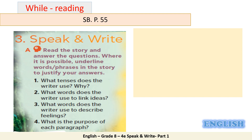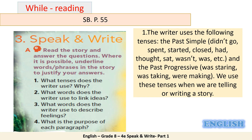Let's answer the first one: what tenses does the writer use and why? The writer uses past simple — examples: didn't go, spent, started, closed, had thought, sat, wasn't, was — and also past progressive — examples: was staring, was taking, were making. We use these tenses when we are telling or writing a story. Remember, we use past simple and past progressive to speak or tell a story.